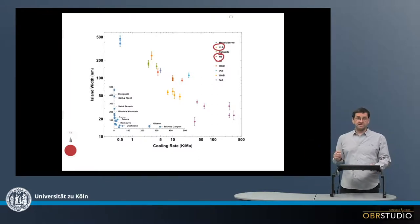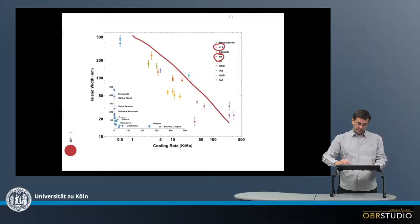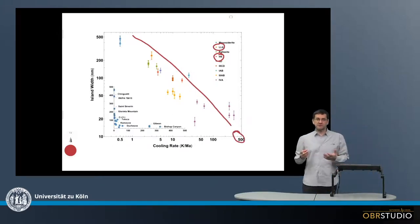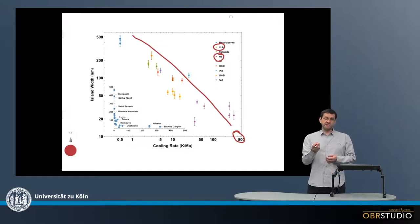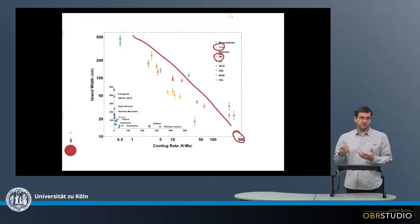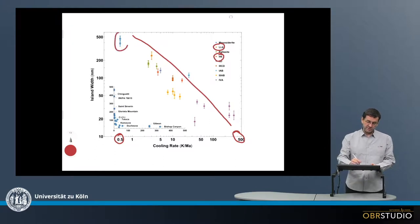Now the x-axis here is a logarithmic scale, and the island width decreases with increasing cooling rate. So if there is a smaller island width, there is a higher cooling rate. And this makes sense because the individual small grains don't have a lot of time to grow. So if the cooling rate is low, something like maybe 0.5 Kelvin per million of years, then it's possible that these islands grow to larger grains.